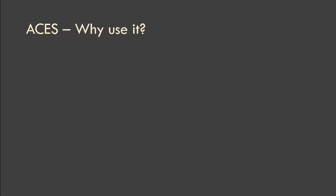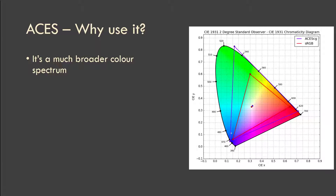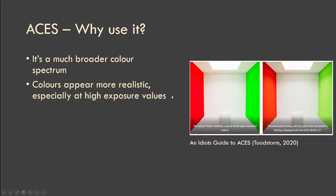So why use ACES? It provides a much broader color spectrum. Looking at the visible color spectrum flattened onto a 2D diagram, you can see that sRGB fits within a neat little triangle covering the colors a computer monitor can display. When we convert our images to ACES CG, we're working within a much broader color gamut, which enables a much broader range of values across the colors. It really shows at high exposure values — colors appear more realistic, especially in bright areas.